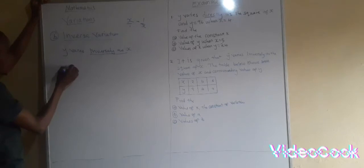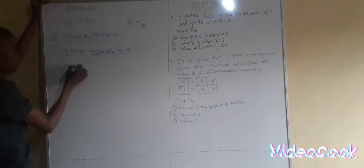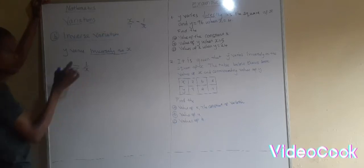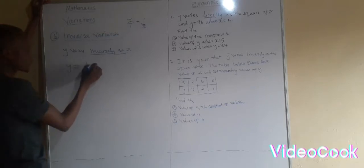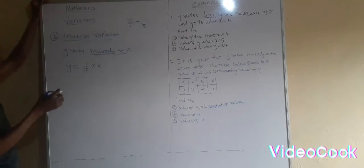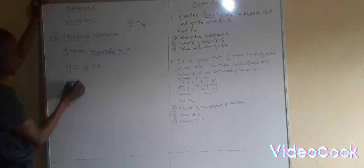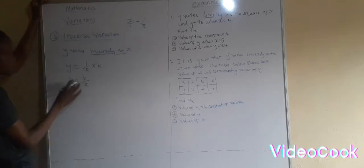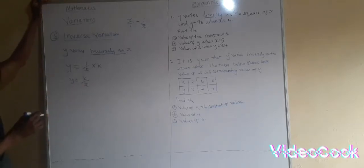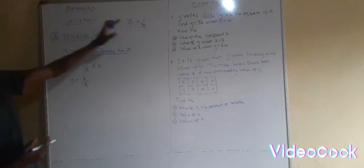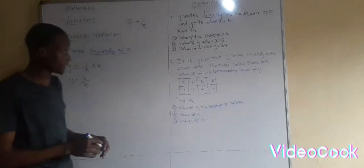So Y varies inversely as x, meaning 1 over x. Do not forget the constant of variation — it must always be there. That gives you Y is equals to 1 times k, which is k over x. So Y is equals to k over x. Now that you know how to come up with the equation, we can go ahead and attempt the questions.